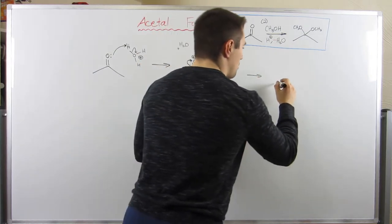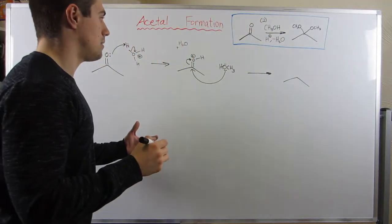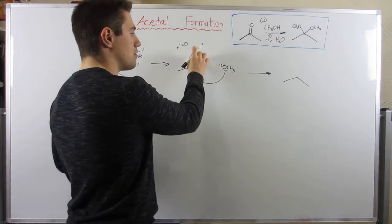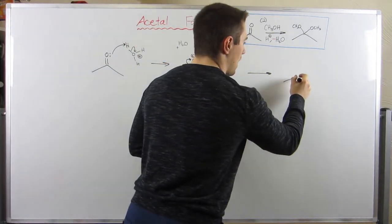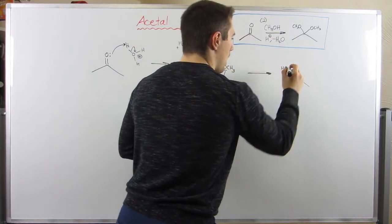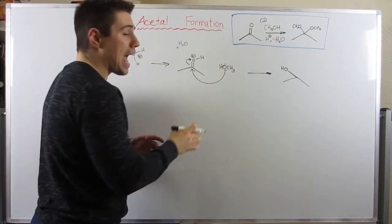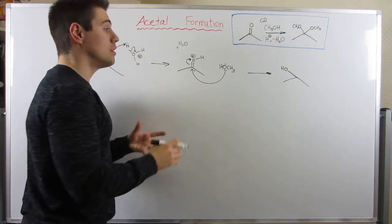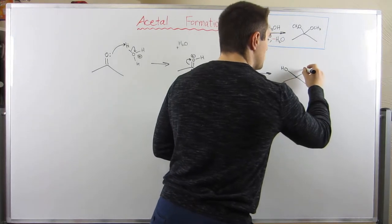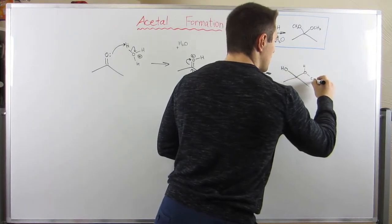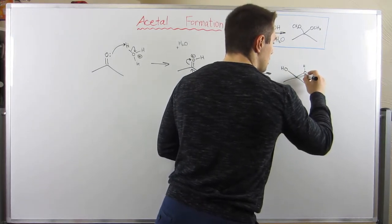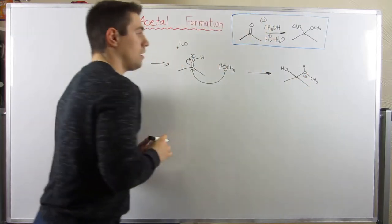If I draw the result of this electron flow, I'm going to draw this OH off to the left. I'm now going to draw the group I just added, the now ether, to the right. I got O bonded to an H, and I got a CH3 down here, and the oxygen has a positive charge.